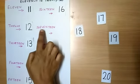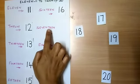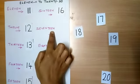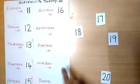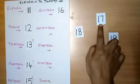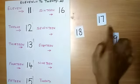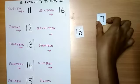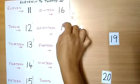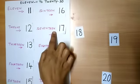S-E-V-E-N-T-E-E-N. That is 17. This is 17. So where is number 17? This is number 17. 1 and 7 makes number 17. So let me arrange number 17 to the number name 17.